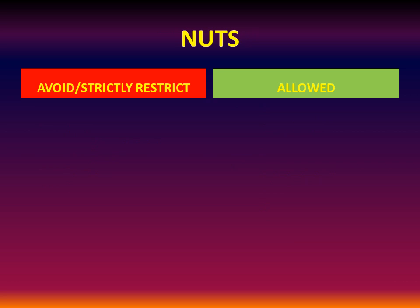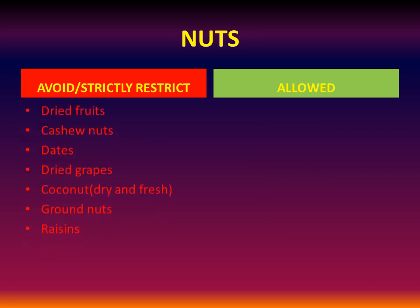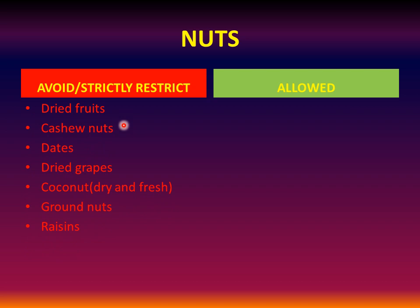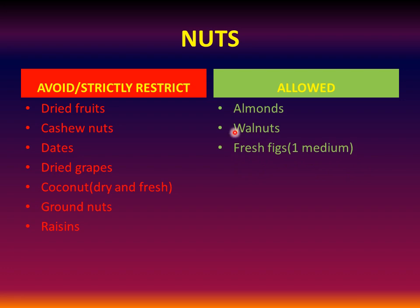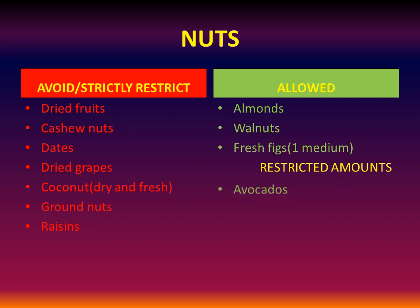Nuts: dried fruits have to be avoided — cashew nuts, dates, dried grapes, coconuts (both dry and fresh), groundnuts, and raisins are all to be avoided. Almonds, walnuts, and fresh figs are allowed in restricted amounts. Avocados can also be taken.